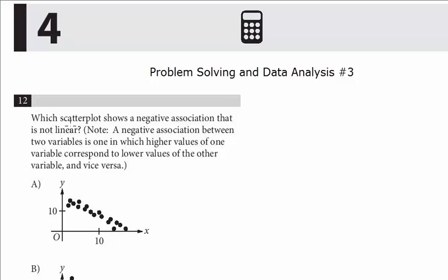We reviewed scatter plots in the previous video. We talked about lines of best fit, trend lines that best represent the data. Here, we want a negative association that's not linear.